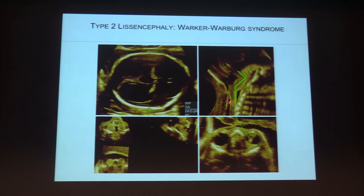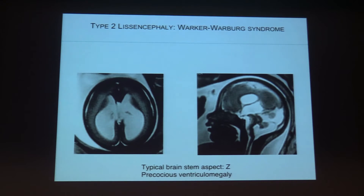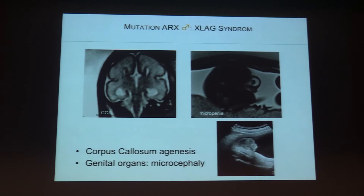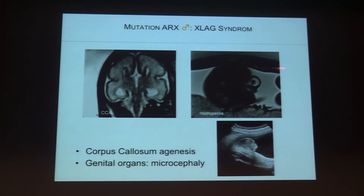We have other lissencephalies, including Walker-Warburg, which is correctly diagnosed when you have this typical Z-shape and very important ventriculomegaly, diagnosed early in pregnancy. On MRI you can see the typical Z-shape with important ventriculomegaly. When you recognize agyria or pachygyria, you have to check the midline and all other fetal abnormalities. When lissencephaly is associated with corpus callosum agenesis and genital organ anomalies, you must think about XLAG syndrome.